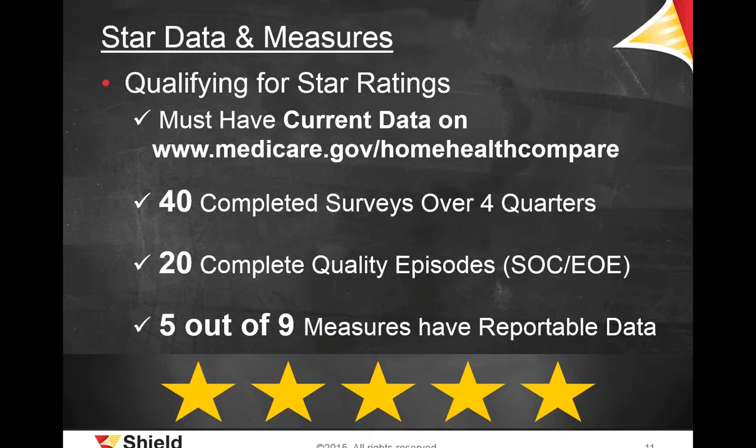For smaller agencies, accumulating star ratings is going to be more difficult than for larger agencies with more patients. Overall, your agency must be able to provide quality data on at least five of the nine measures to have reportable data. If data is not present for any five of the nine measures, the star rating system will not be activated. If your agency doesn't currently have qualifying data, you can potentially have that rating available in the future as more data is submitted. If no data is reported, it will show a dash or a note stating data wasn't available.